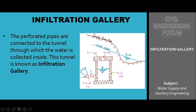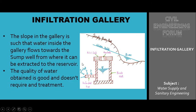The slope in the gallery is such that the water inside the gallery flows towards the sump, from where it can be extracted to the reservoir. The water stored in the cross-sectional area — we are providing a slope linearly in this tunnel, and this water gets transmitted through this slope due to gravity to the storage reservoir, from where we can directly use the water.